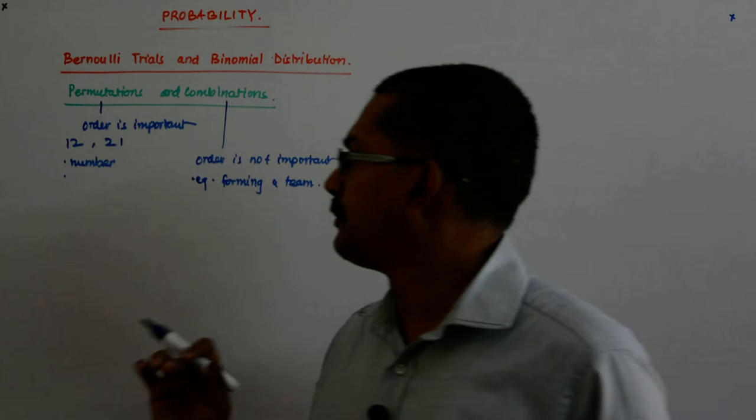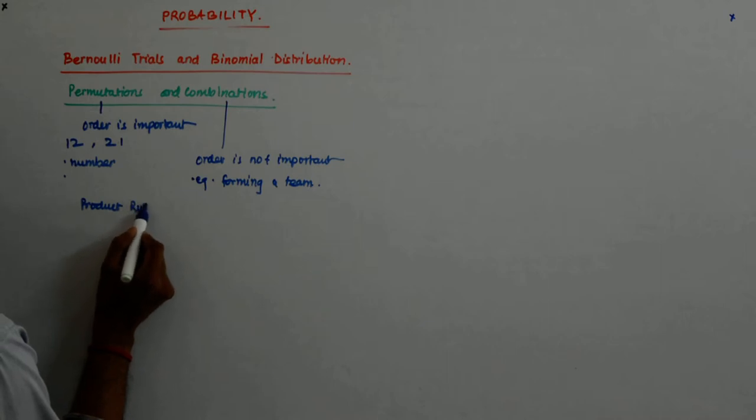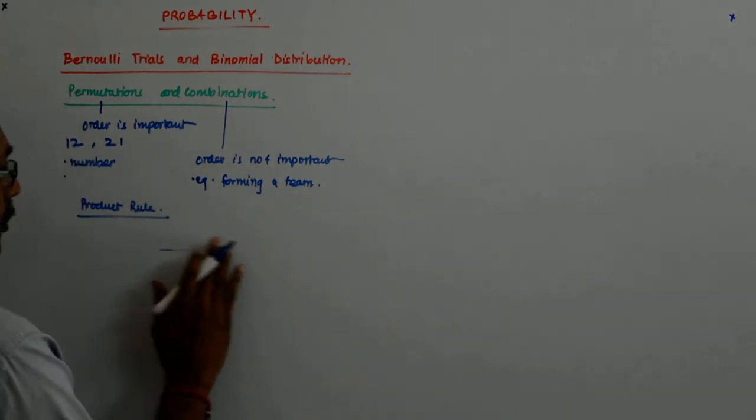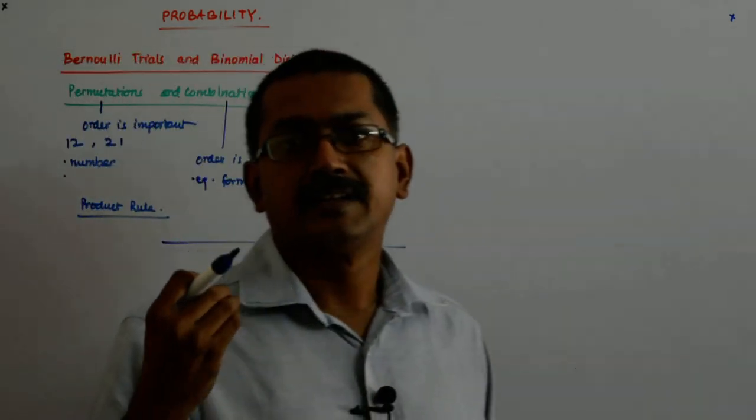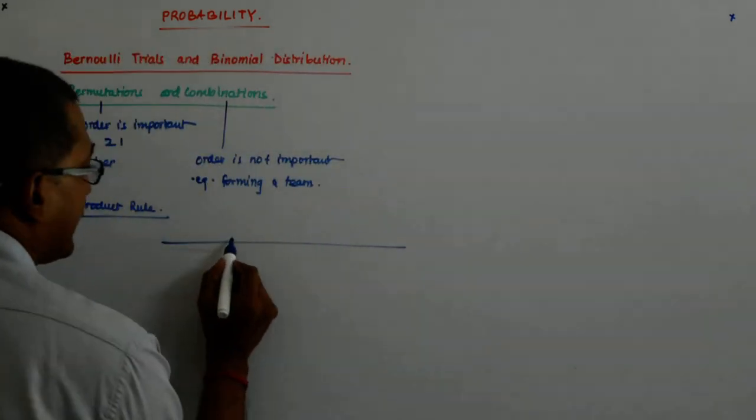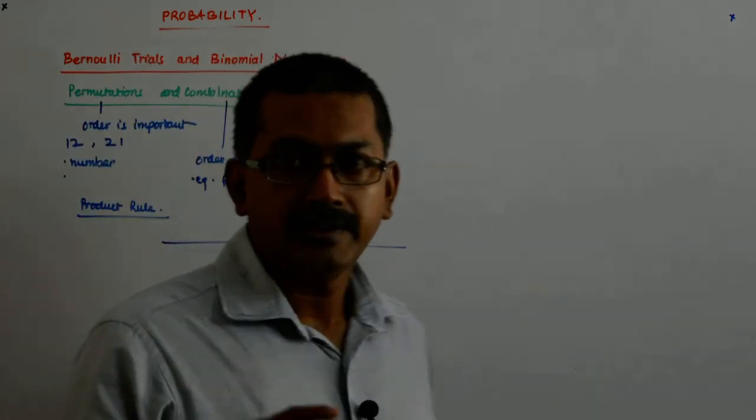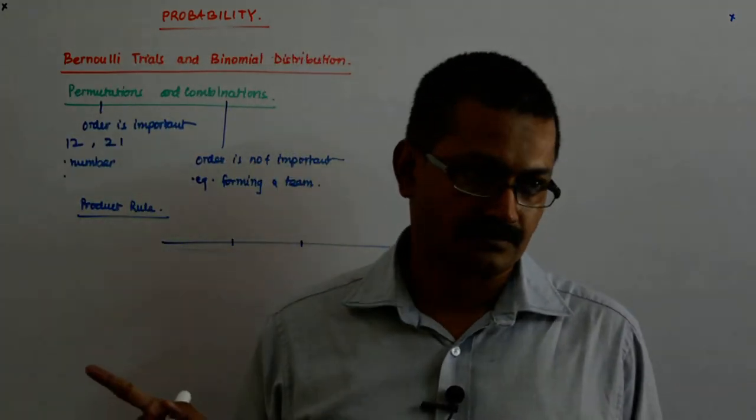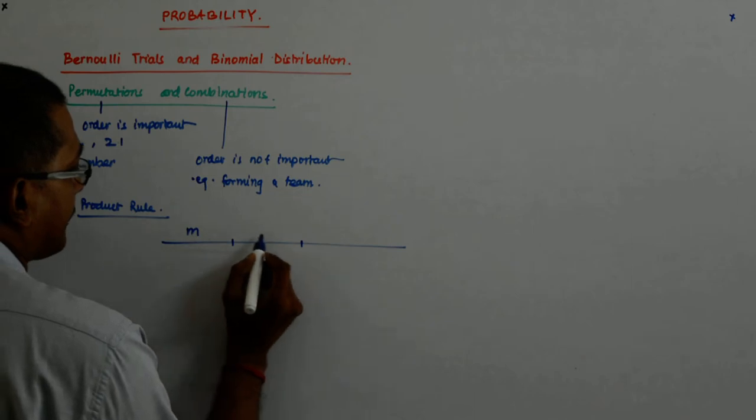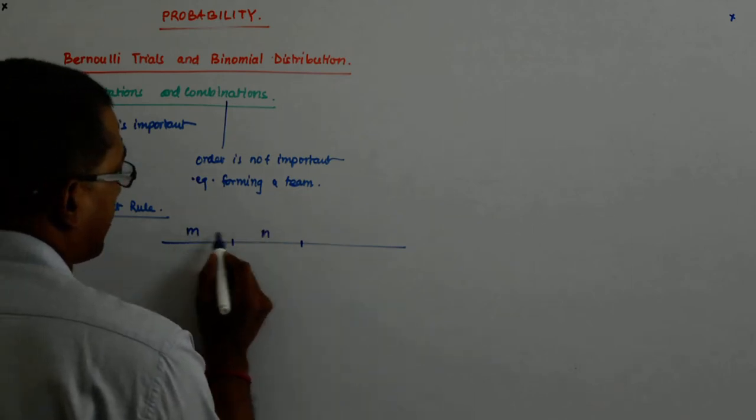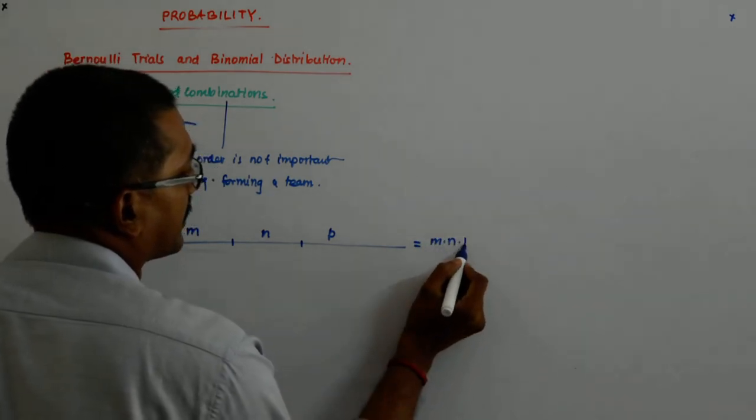Now there are 2 simple rules that we should know when dealing with permutation and combination. One is called the product rule, and it is what? If a full task, this is the full task, it can be divided into certain sub-tasks, each independent of the other. And if this sub-task can be done in m and this in n and this in p ways, then the full task will be done in m into n into p ways.